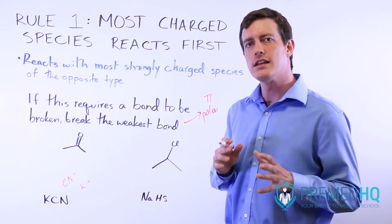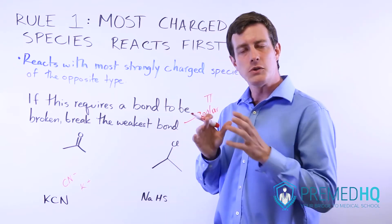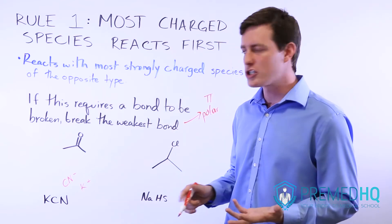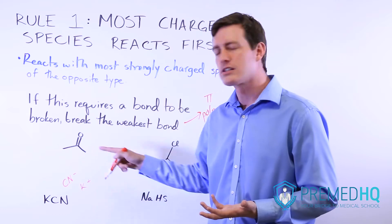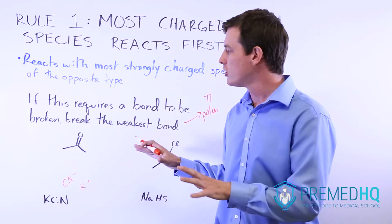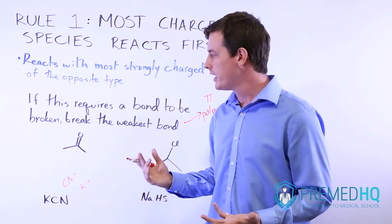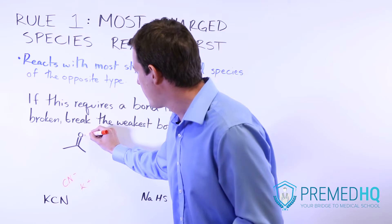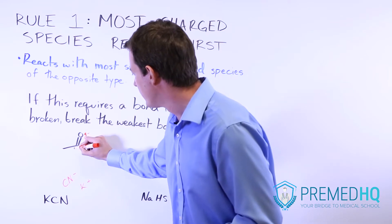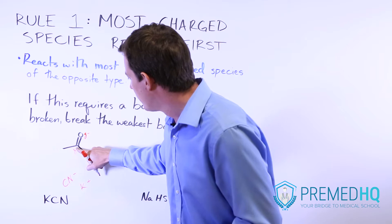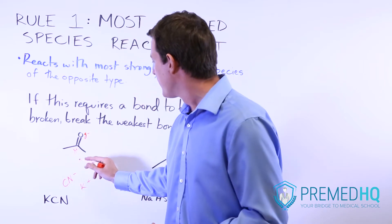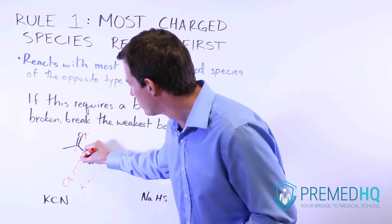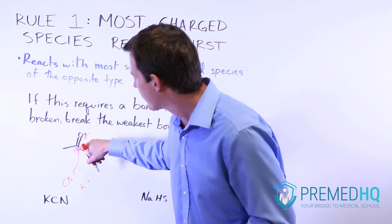Remember that nucleophile means it loves the nucleus — phile means love — so nucleophiles love the nucleus. Because the nucleus is positively charged, a strong nucleophile is something looking for a positively charged thing nearby. With this ketone group, we have a partially negative oxygen and a partially positive carbonyl carbon. What will most likely happen is the electrons from this cyanide group will go and attack at that carbonyl carbon.